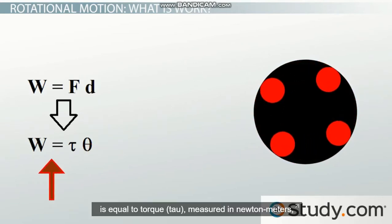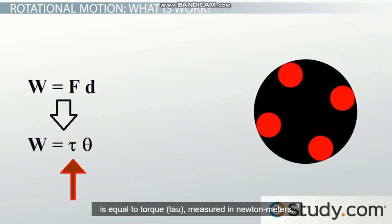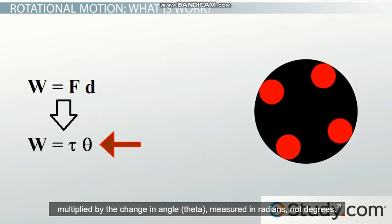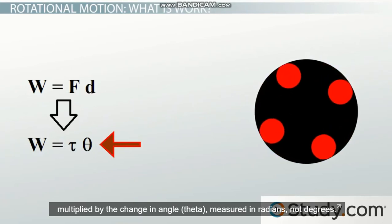So the rotational equation for work says the work, measured in joules, is equal to tau, measured in Newton meters, multiplied by the change in angle theta, measured in radians, not degrees.